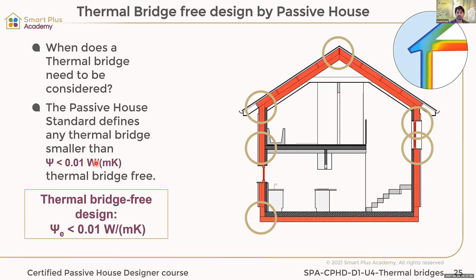In my opinion, and I think it's to some extent already executed in Australia as well, this is climate dependent — much like the U-value. This thermal bridge-free design value is climate dependent, but the standard states 0.01 Watt per meter Kelvin. This is what we must meet when we speak about the passive house standard and thermal bridge-free design.